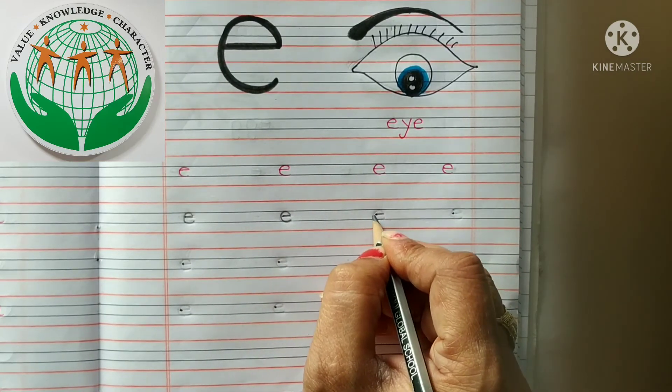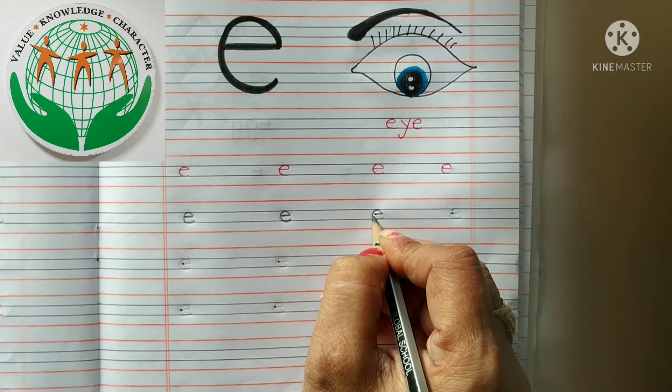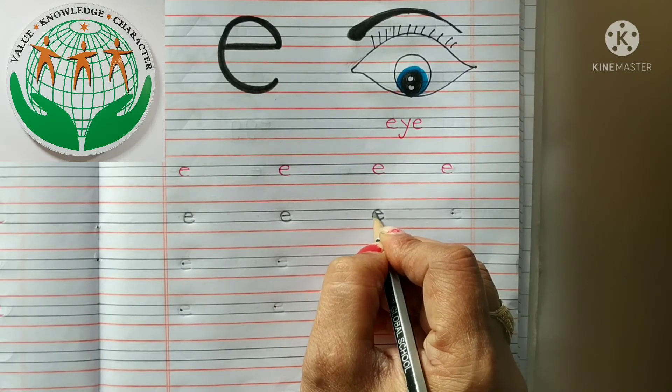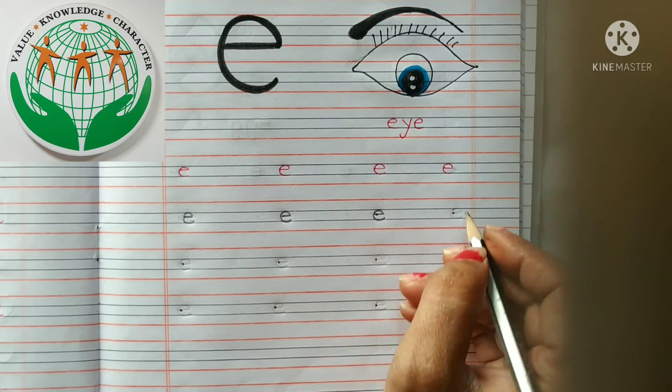Write again. Subse pahle kya karna hai? Eek sleeping line draw karna hai. Now we will make a curve. Aur haamay kya karna hai? Sleeping line draw karne ki baad haamay curve banana hai. This is small e.